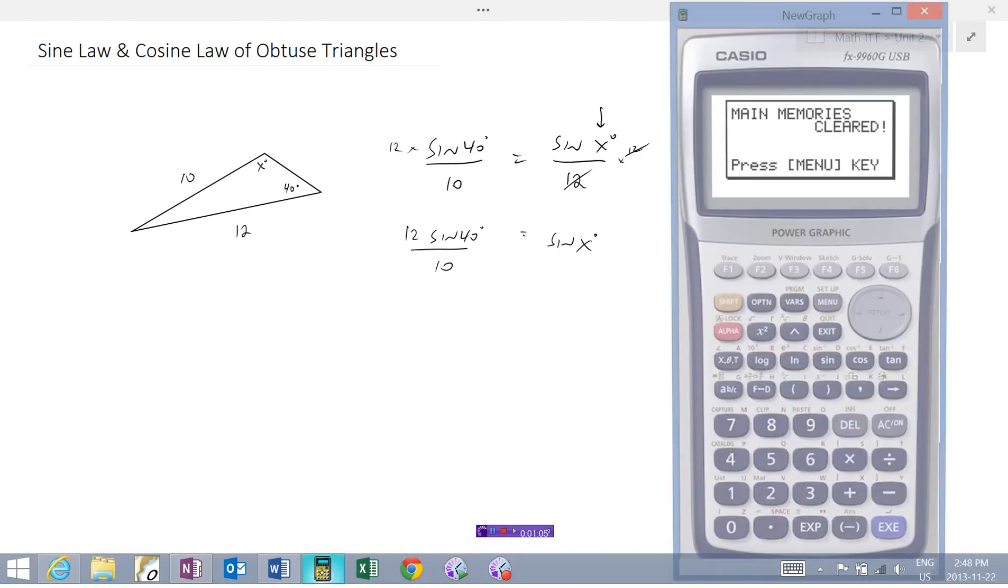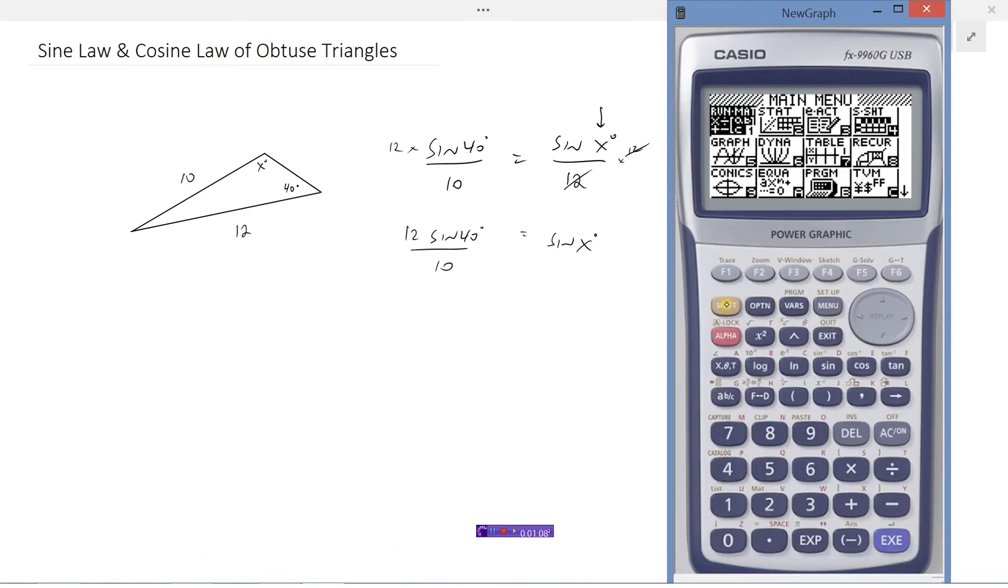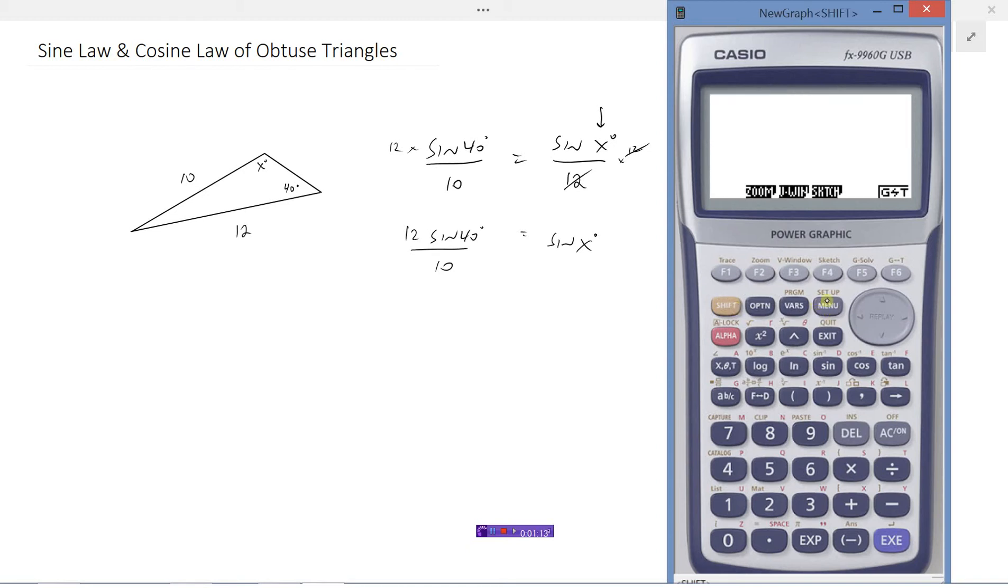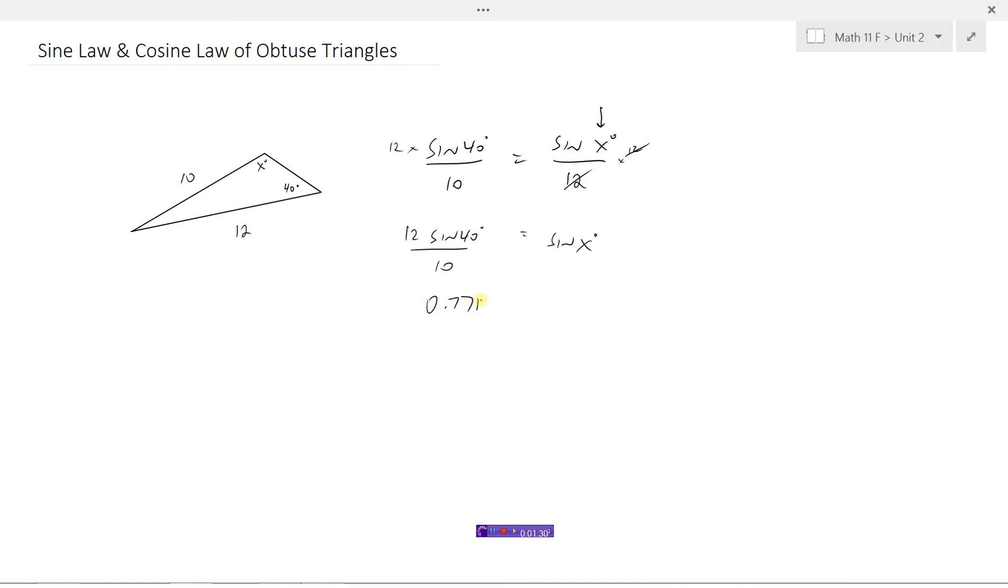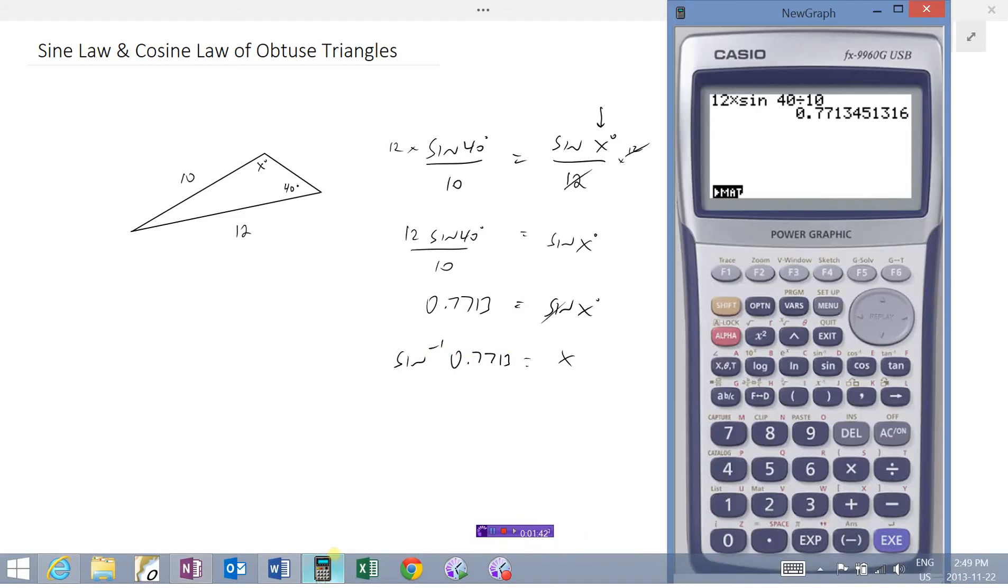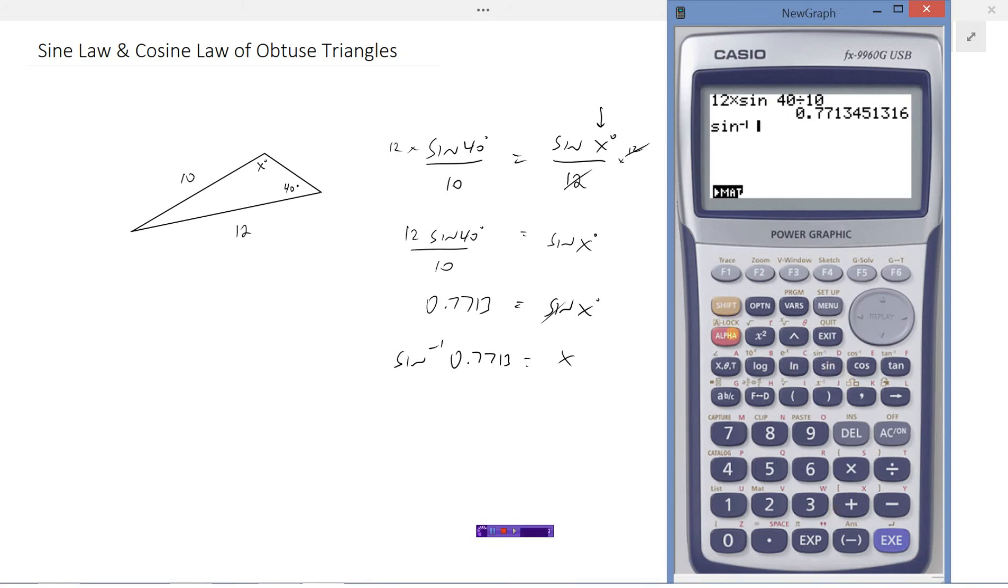Let's go and figure out, I'm going to have to make sure I'm in degrees here again. So 12 times sine 40 divided by 10 is 0.7713. And then in order to find x I'll take the inverse sine of both sides. Taking the inverse sine of that answer gives us 50.5 degrees.